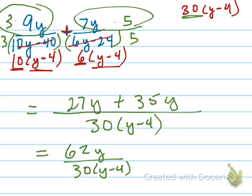All over 30 times y minus 4, and you're still not done, because now what can you cancel out of 62 and 30? They both have a factor of 2, so that would turn into 15, and that would turn into 31, and there's your final answer. 31y all over 15 times y minus 4.